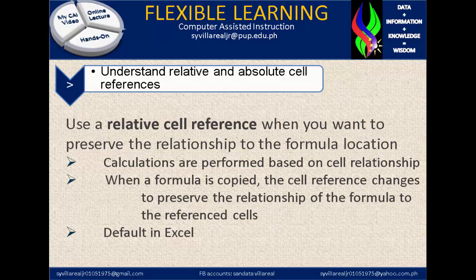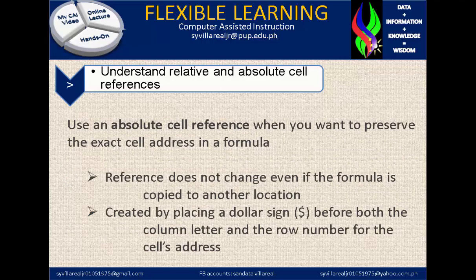Relative cell reference is the default in Excel — every time you make a calculation, it is called a relative cell reference. Use an absolute cell reference when you want to preserve the exact cell address in a formula, such that the reference does not change even if the formula is copied to another location. It is created by placing a dollar sign before both the column letter and the row number for the cell address.